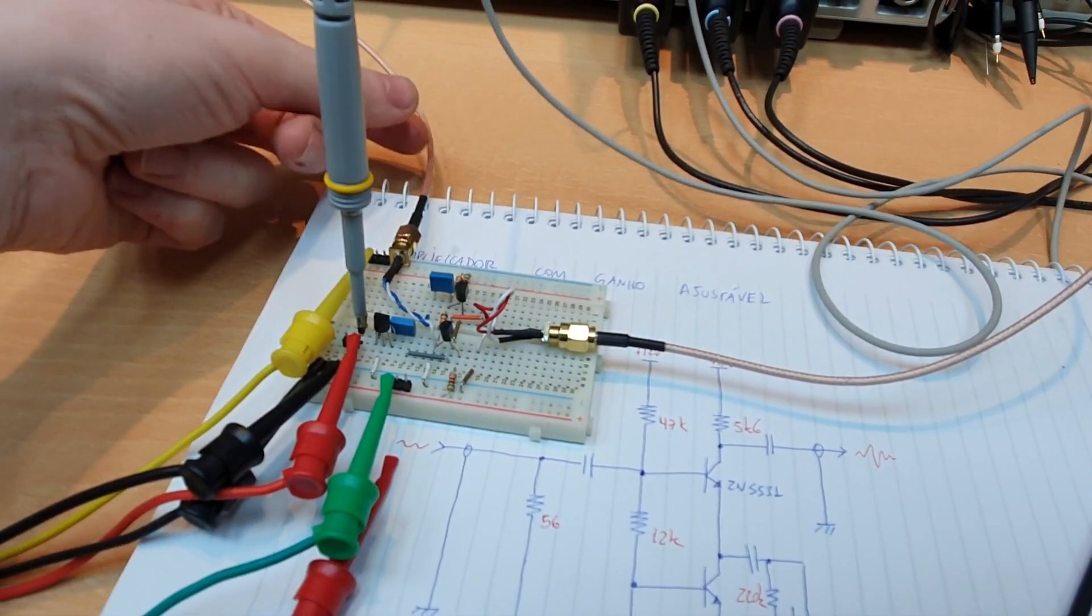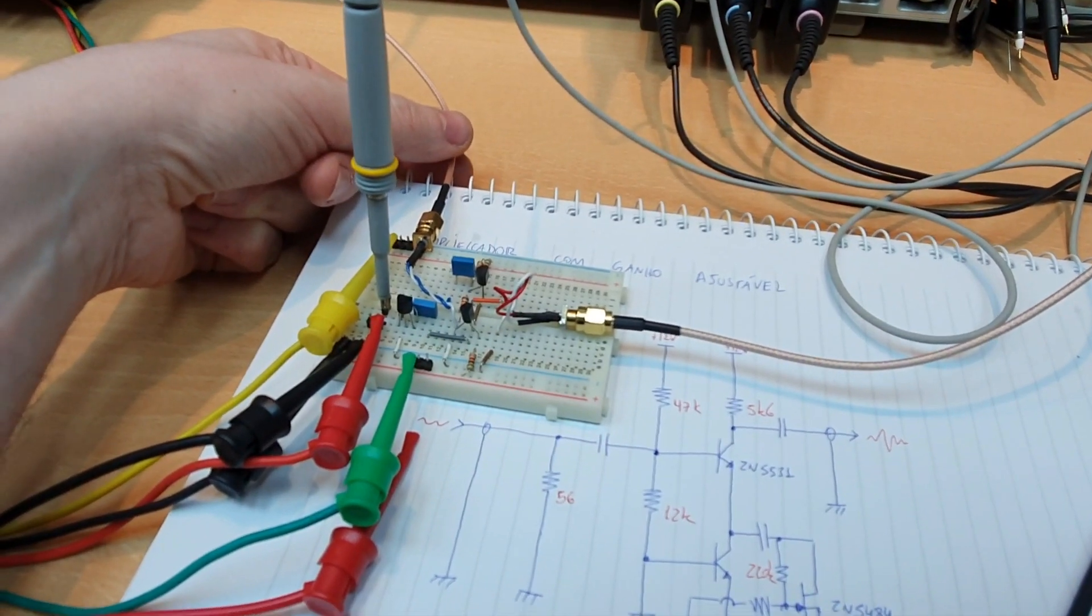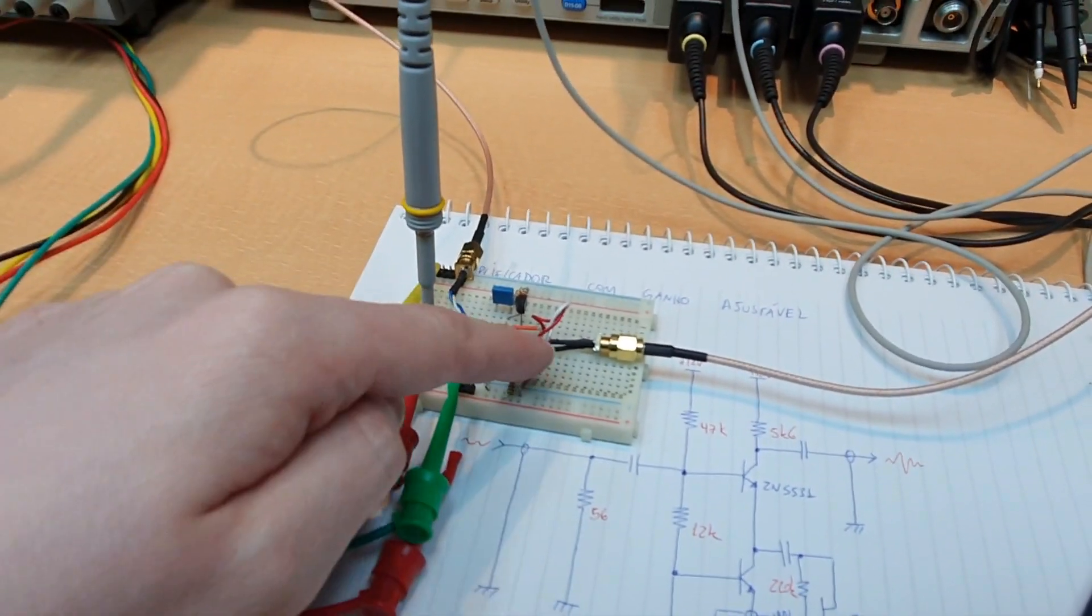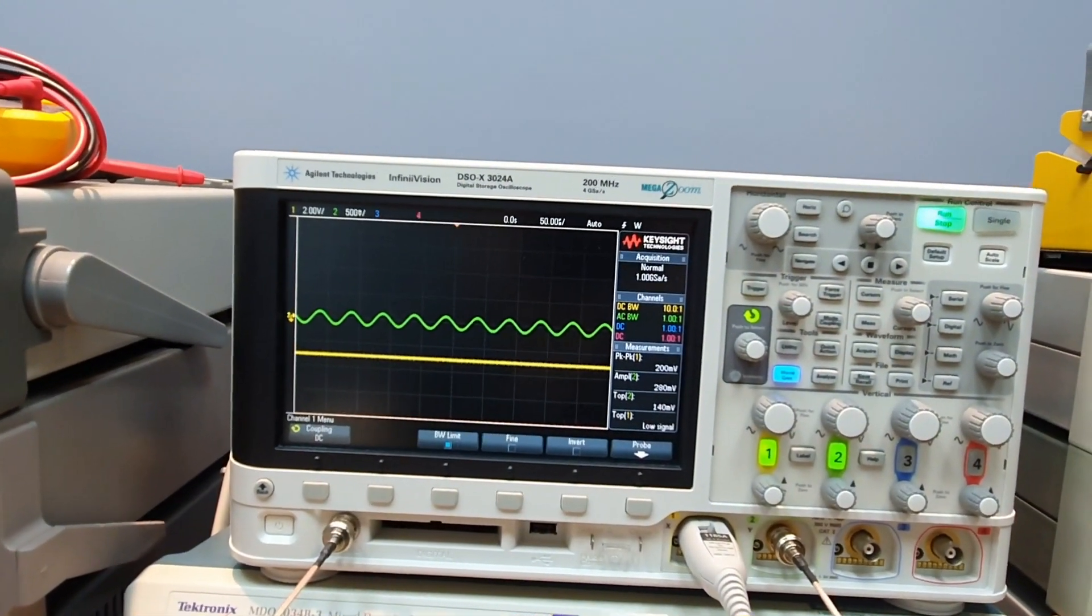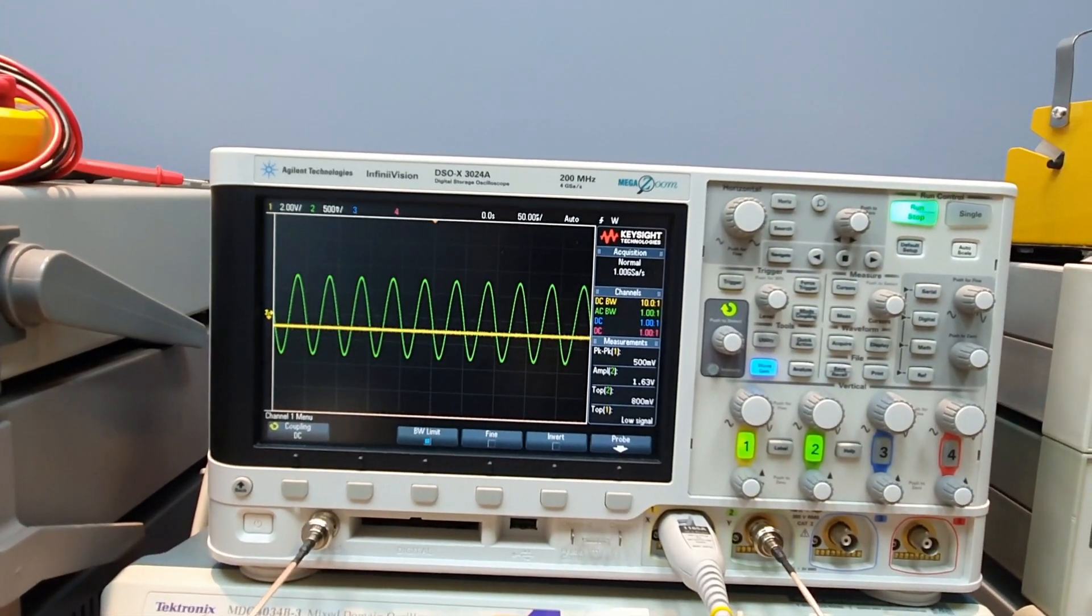So guys, this is the circuit we have here on the input, a 100 millivolt peak-to-peak signal and at the output we can control the gain of the amplifier. So we can control the amplitude of the signal.